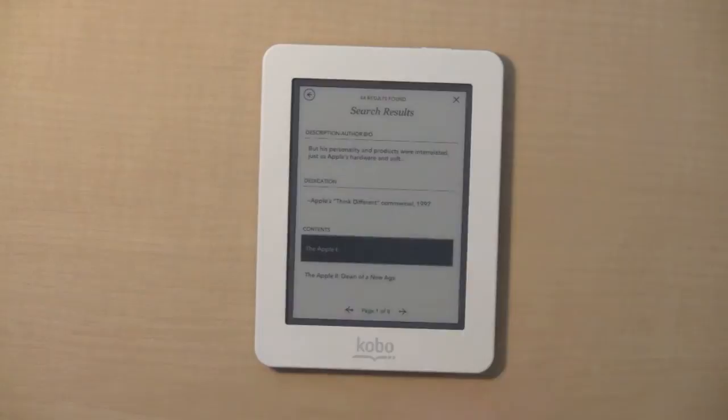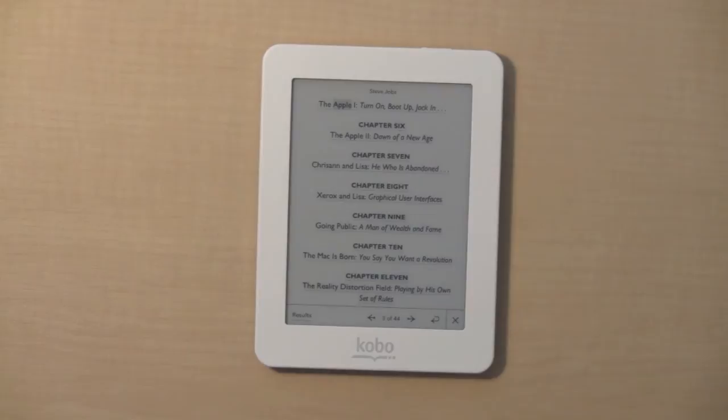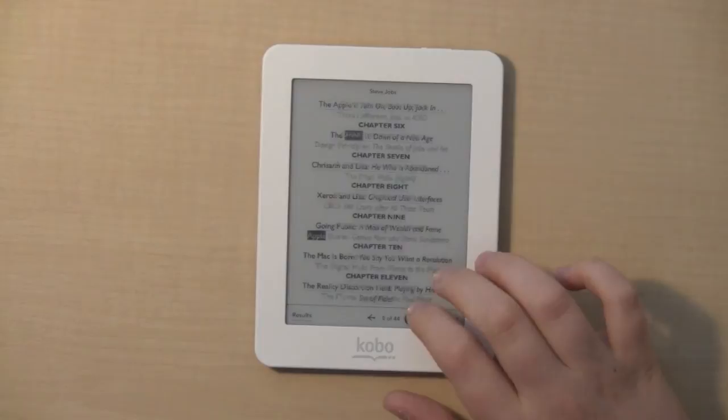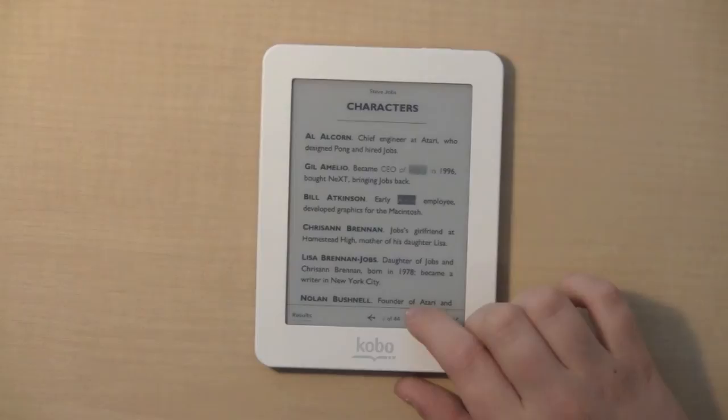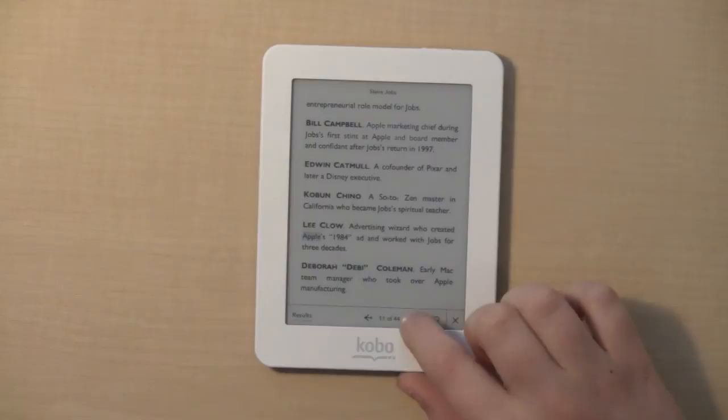So it comes up with a whole bunch of stuff. I can just click that and it'll bring me to the page. I can also skip pages easily by just tapping the hours on the bottom. It'll bring me to the next page that says Apple on it.